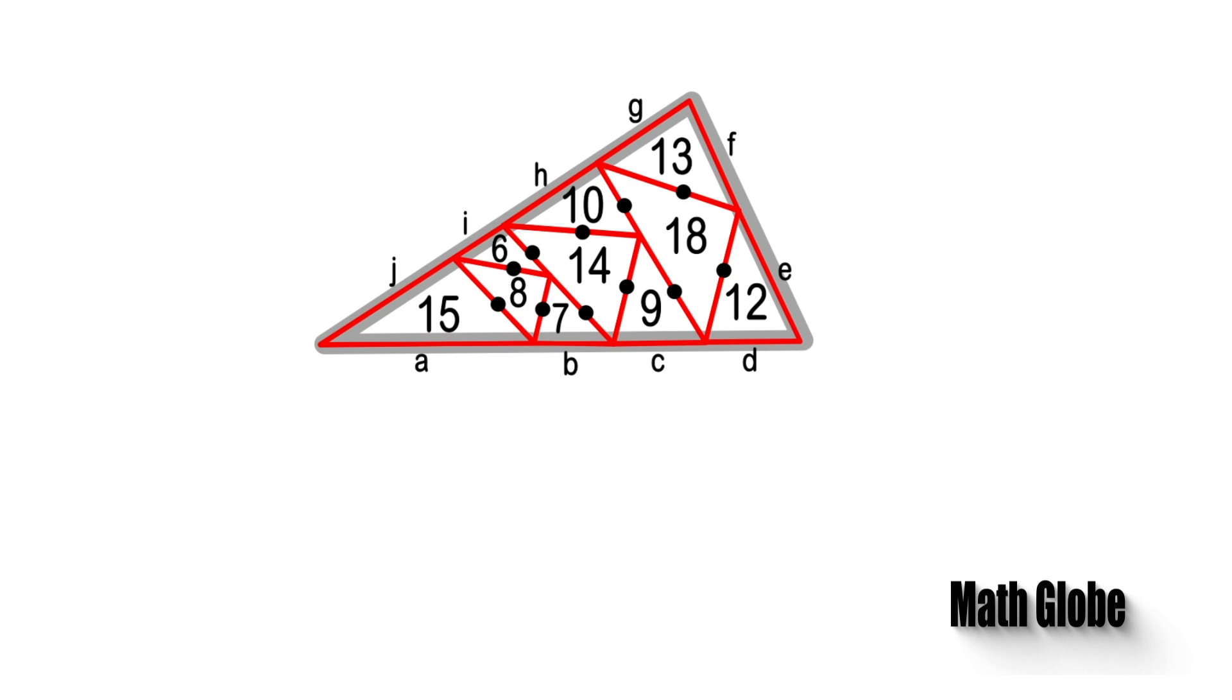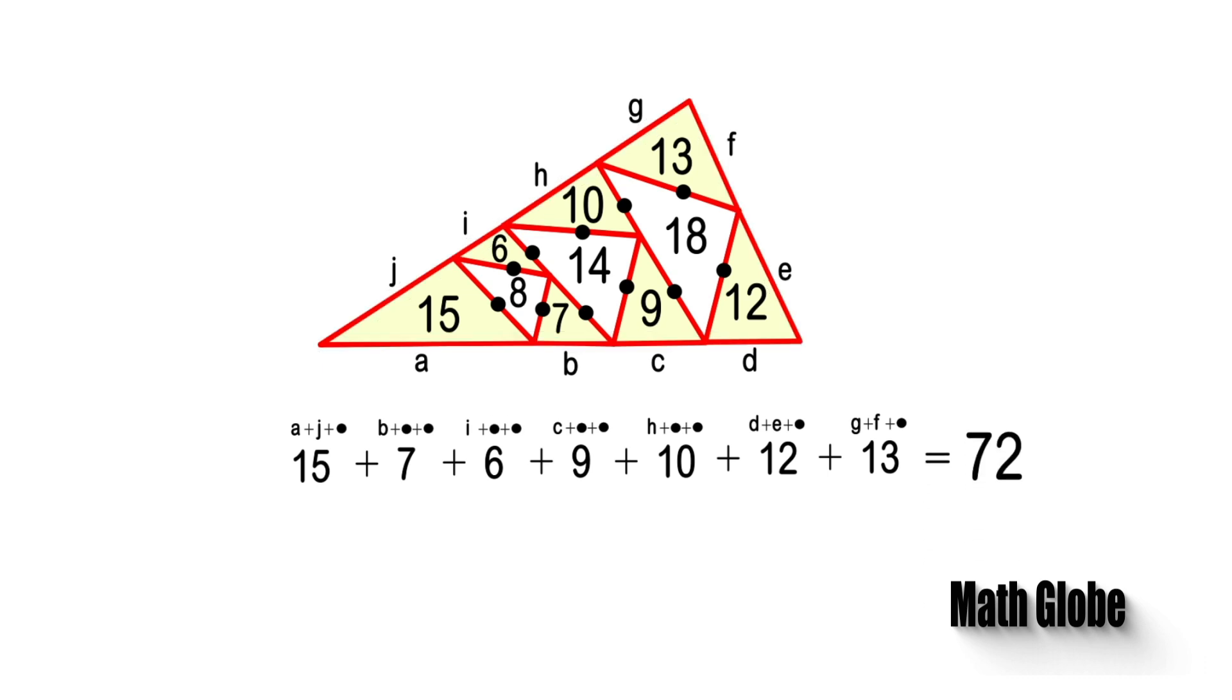As a result, total perimeter of the triangles situated on the edge of the main one will be equal to 72. Likewise, total perimeter of the triangles situated in the inner part of the main shape will be equal to 40.